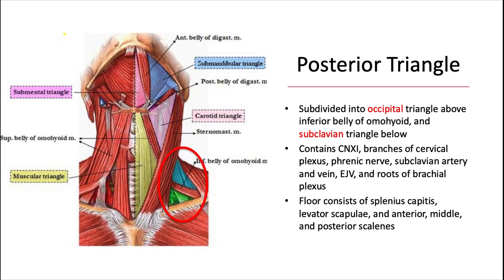And then we have the posterior triangle, which is behind the sternocleidomastoid muscle, and this one itself is subdivided into two smaller triangles: the occipital triangle, which is above the inferior belly of the omohyoid.